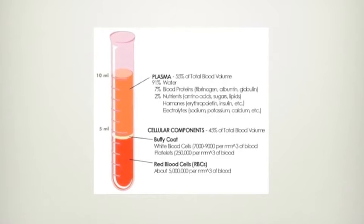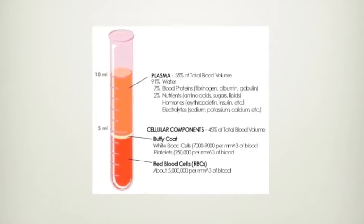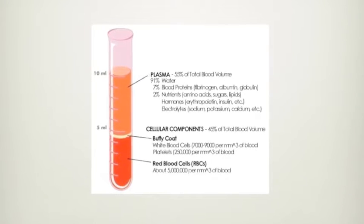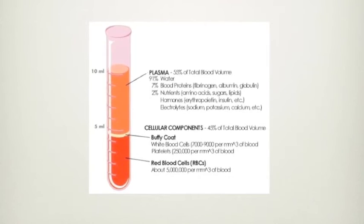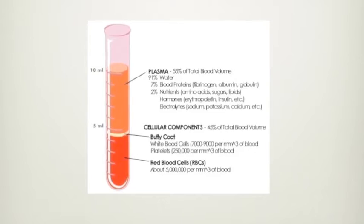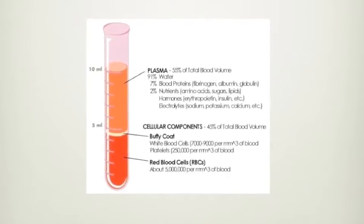This image shows what 10 milliliters of your blood would look like if we put it through a centrifuge, where about 5.5 milliliters would be the plasma, a very small amount would be the Buffy coat, with the rest being the red blood cells.